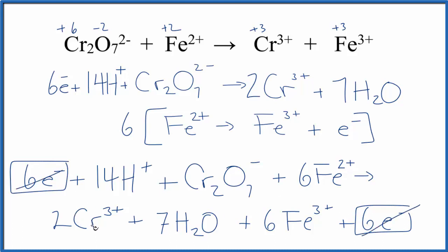It looks like everything else is unique. So this is the balanced redox reaction for Cr₂O₇²⁻ plus Fe²⁺. Let me clean this up a bit.